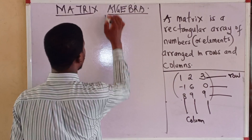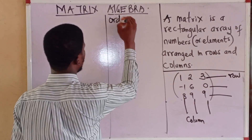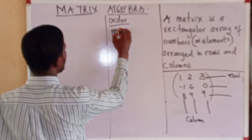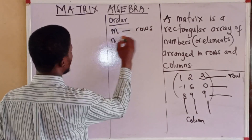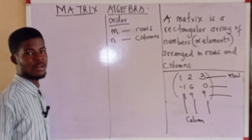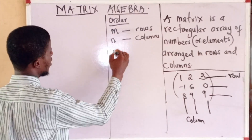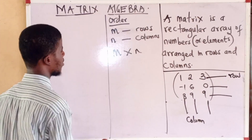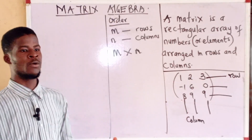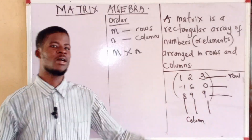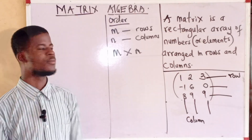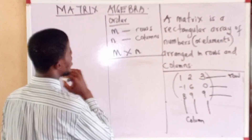Now we're talking about the order of a matrix. If a matrix has m number of rows and n number of columns, the order of that matrix is m by n. So the order of a matrix is the number of rows by the number of columns. It is also called the dimension or size of a matrix.